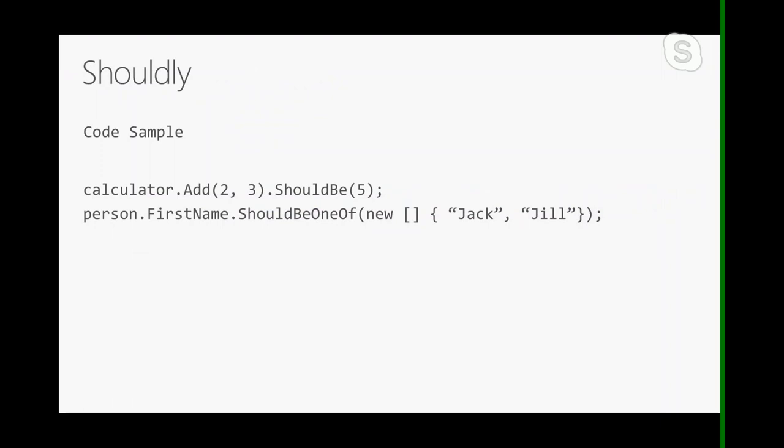Here's how Shouldly looks. It works by providing extension methods on objects — when you call a calculator.Add method, instead of passing that to a separate assertion method, you can call the .ShouldBe() extension method on the return value. Same here with person.FirstName.ShouldBeOneOf(). Shouldly gives us a very natural way to assert conditions — it feels more natural than assert.equals. But hey, choose your poison.